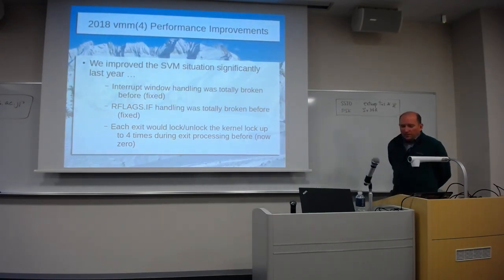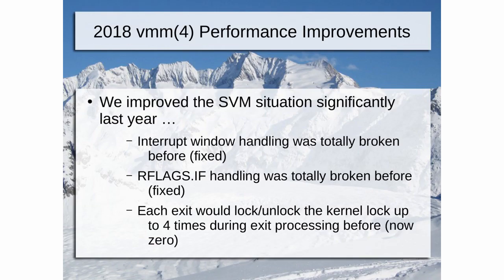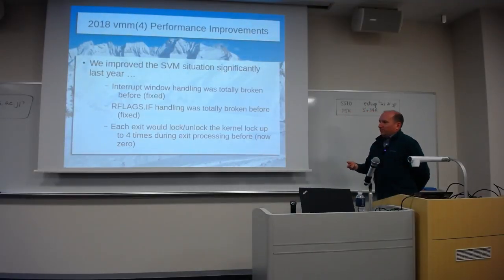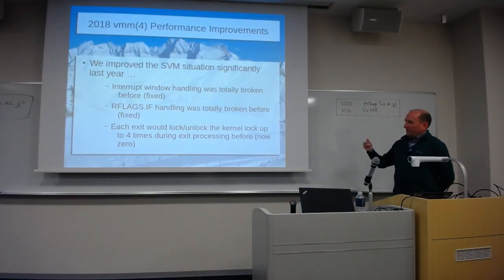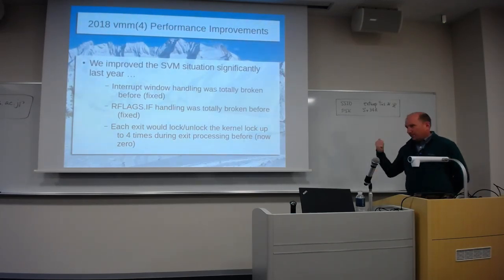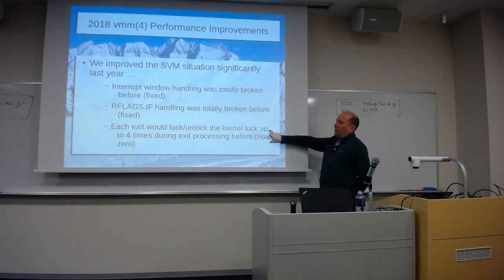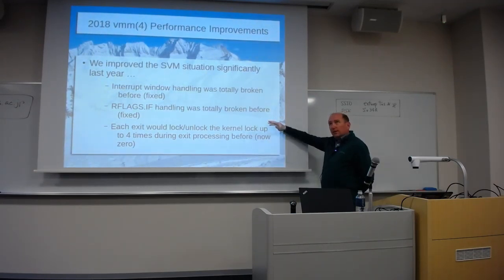On SVM, we were also locking and unlocking the kernel lock up to four times during exit processing. As a VM would trigger an exit to the hypervisor, we would lock the kernel lock for a small piece of code, then unlock it, then lock it again repeatedly. For those who know OpenBSD, we still have a substantial amount of our kernel under the kernel lock, so that slows down the VM, VMD, and the rest of the system. Now this model follows much more closely the Intel model in VMX, where we only lock it right at the beginning and right at the end.